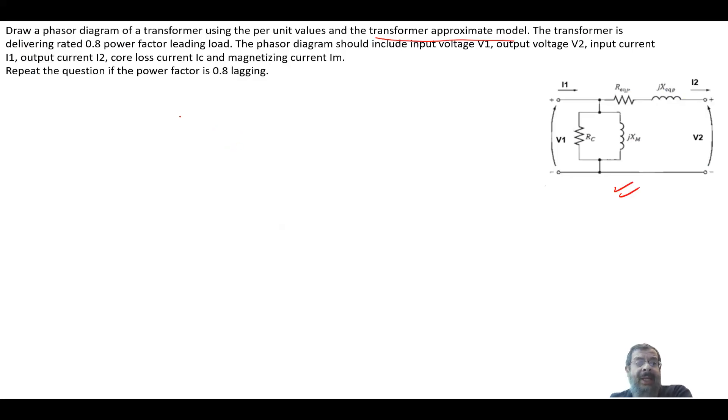They want to see what the phasor diagram looks like when the transformer is delivering rated power at 0.8 power factor leading. You need to show the primary voltage V1, secondary voltage V2, input current I1, output current I2, the core loss current IC, and the magnetization current IM. Then I will repeat the same thing for 0.8 power factor lagging.